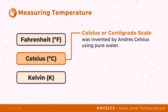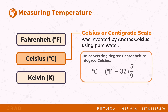Anders Celsius used pure water in his experiment, wherein he assigned 0 degrees Celsius to the temperature where pure water freezes, and 100 degrees Celsius to the temperature at which pure water boils. In converting degrees Fahrenheit to degrees Celsius: degrees Celsius equals degrees Fahrenheit minus 32, times 5 divided by 9. This scale is most commonly used today.